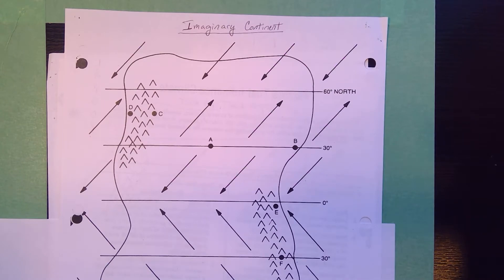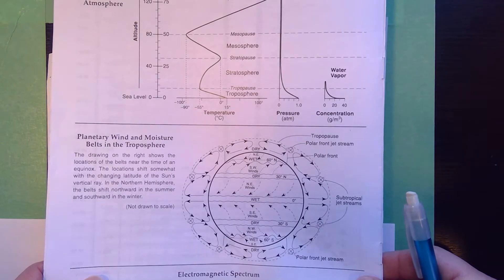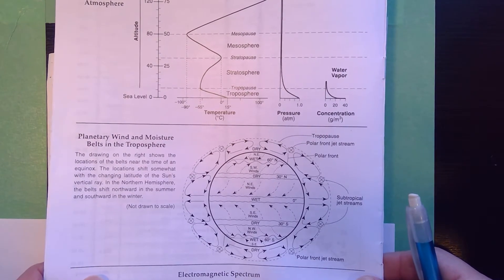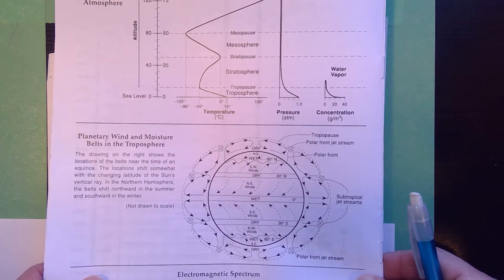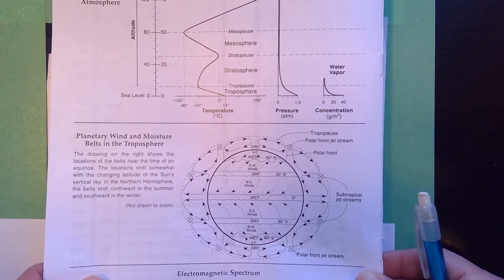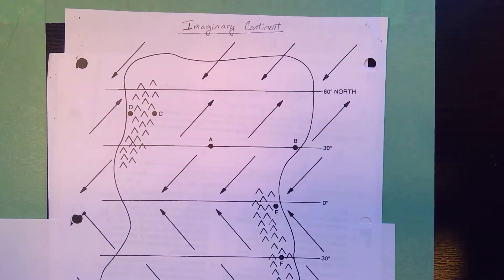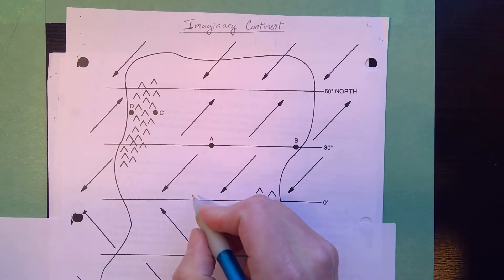The first thing I'd like you to do whenever you see a group like this is automatically flip to page 14. On page 14, you've got the planetary wind and pressure belt chart, and this helps you to remember where rainforests and deserts are. Your wet belts and dry belts alternate with high and low pressure.